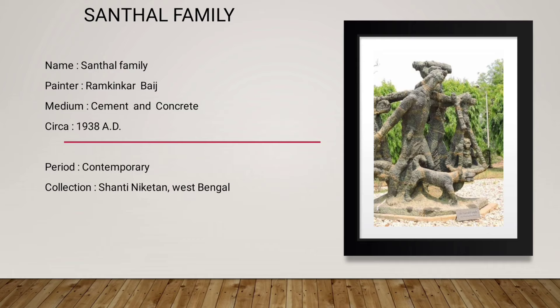This sculpture is established in Shantiniketan, West Bengal. There are 4 persons here — a man who is lifting his shoulder, made for the purpose of carrying loads. He has some clothes. He is moving, and he has also shown a dog and a baby. This sculpture is made from basic material, and the human usual activities are shown in this idol.